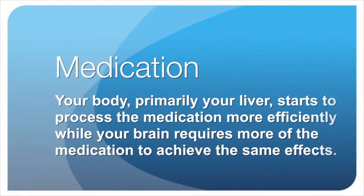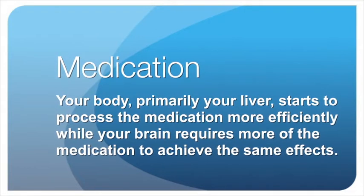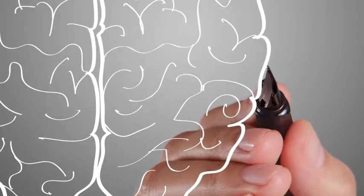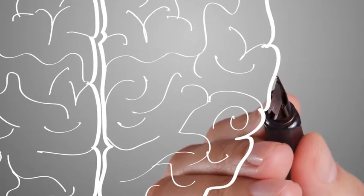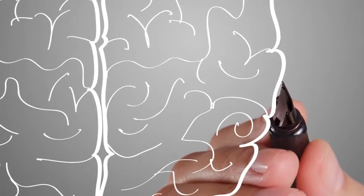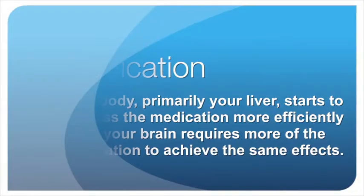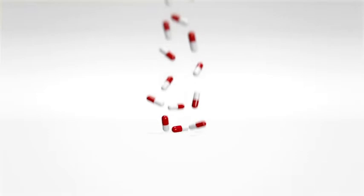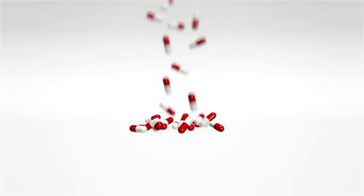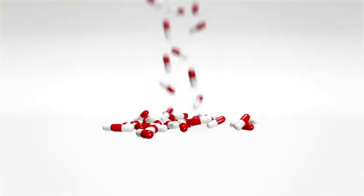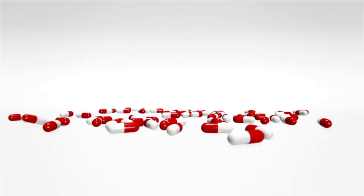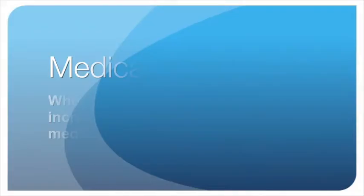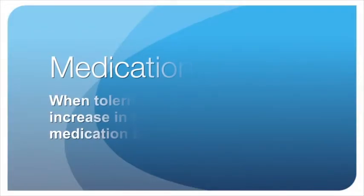The nervous cells in the brain start to shut off their responsiveness to the drugs. Ultimately, what this means is that to see the same effect from your medication, you would need to take a higher dose.